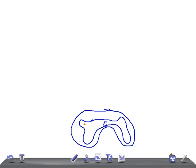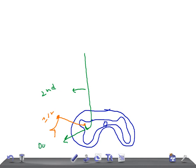The axons from the dorsal nucleus of Clark are uncrossed. This is the dorsal spinocerebellar tract — the first order neuron enters, and the second order neuron begins at the dorsal nucleus of Clark. These fibers ascend on the same side and reach the lateral column of the same side — remember, the same side. They do not cross.